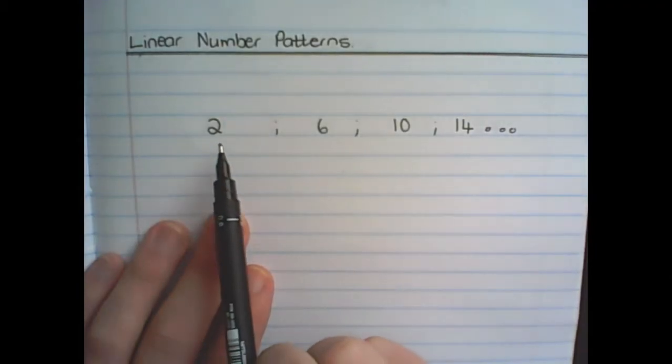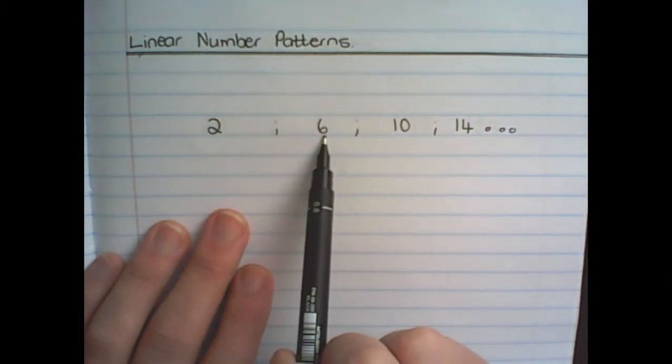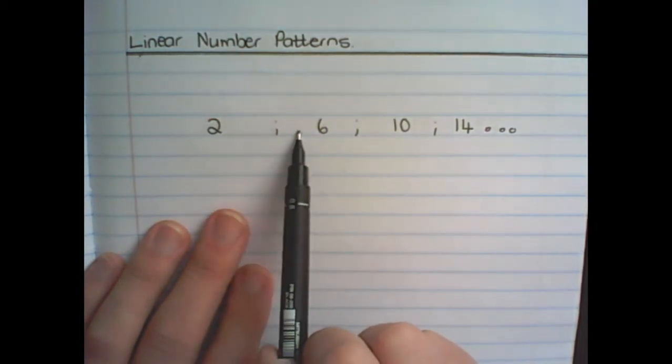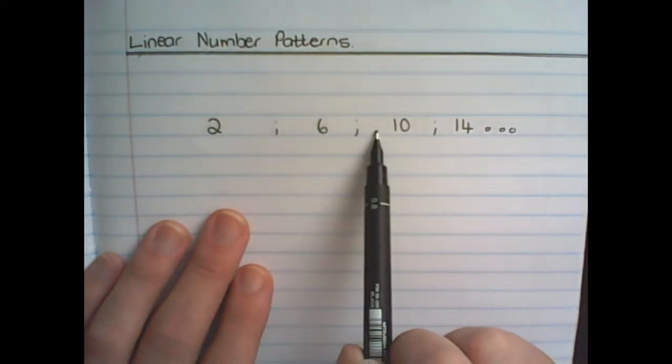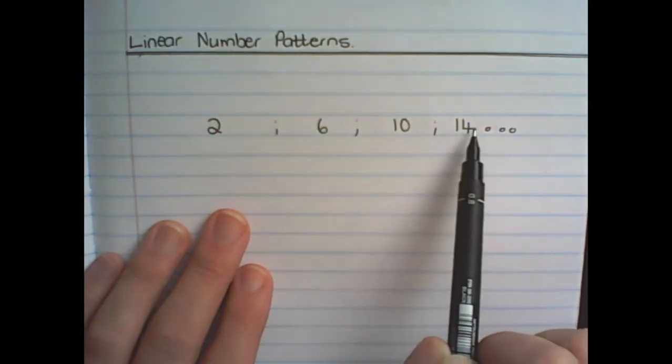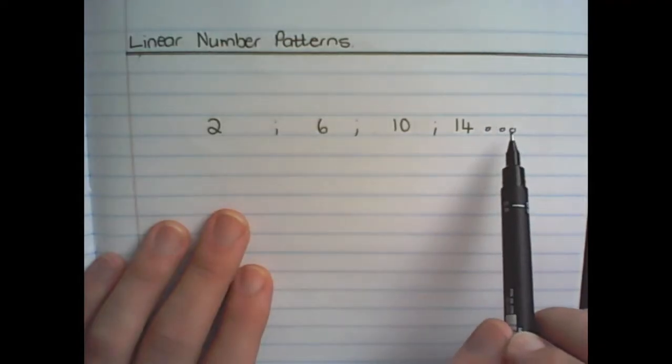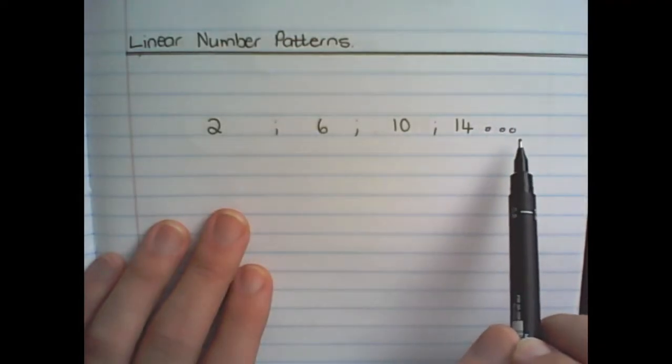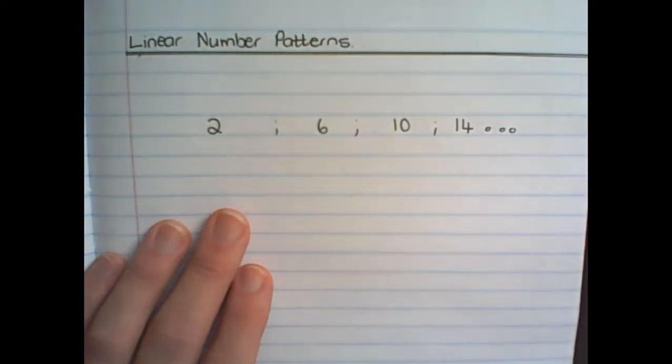So if we study the pattern, we see that when we start at 2, to get to the next number in our pattern, 6, we need to add 4. To go from 6 to 10, we need to add 4 again. And from 10 to 14, we need to add another 4. So our next term in this sequence would be 18, because we simply add 4 to get to the next term.